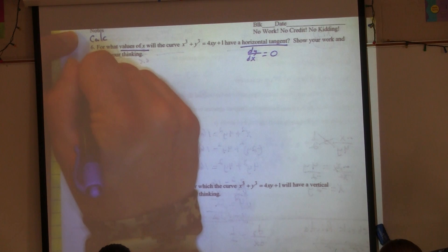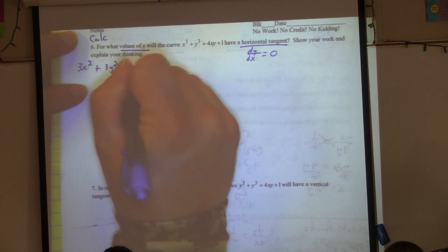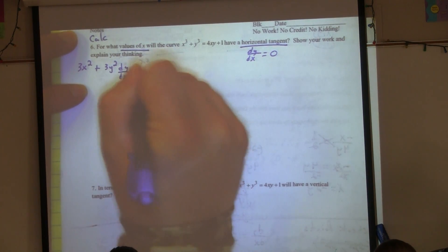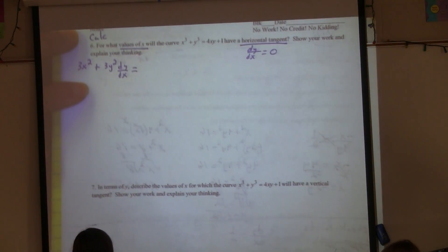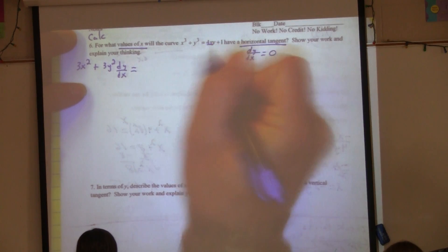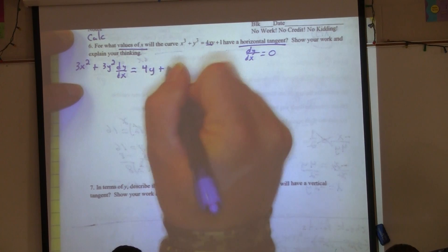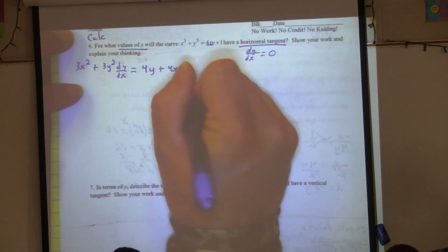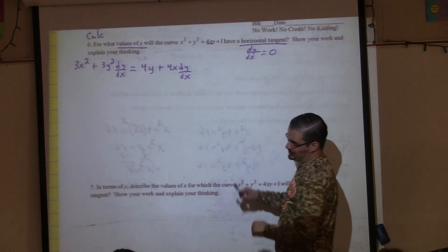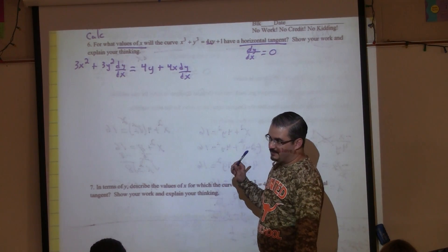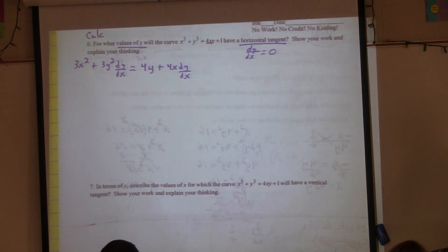Let's look at six. This one is actually a calculator problem. We need the calculator in order to finish this. It says, for what values of x will the curve have a horizontal tangent line? Show your work and explain your thinking. So notice that this one is not asking for at what points. This one is only asking for at what values of x. So that's kind of cool. We don't have to find the whole point, we just need the x values.